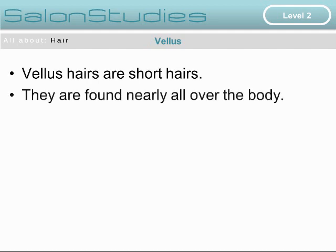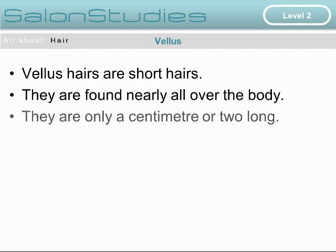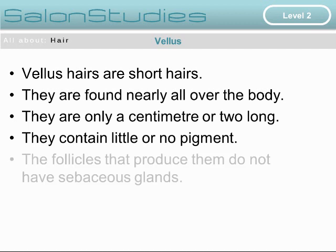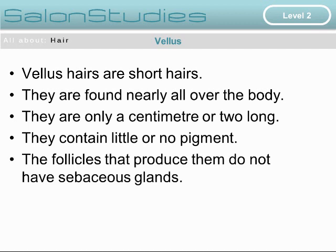Vellus hairs are short hairs found nearly all over the body. They are only one centimetre or so long. They contain little or no pigment at all, and the follicles that produce them do not have any sebaceous glands.